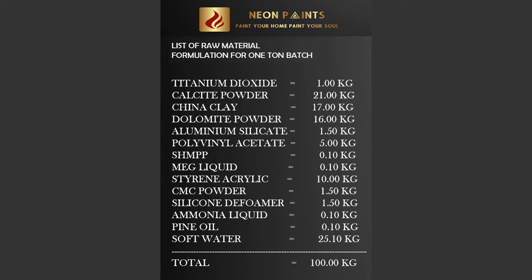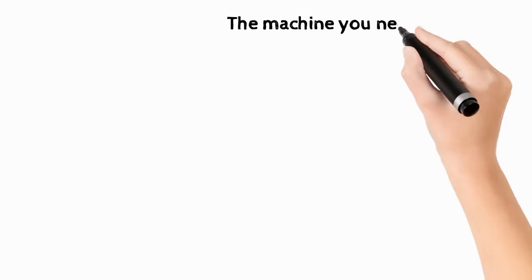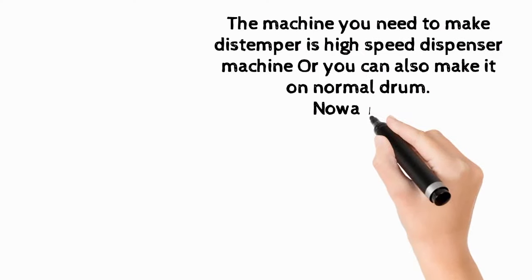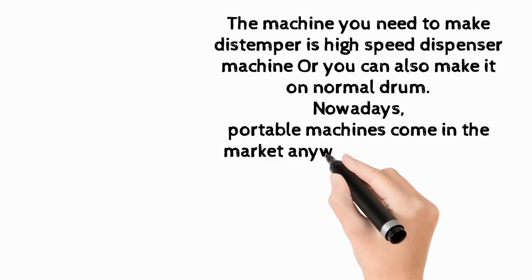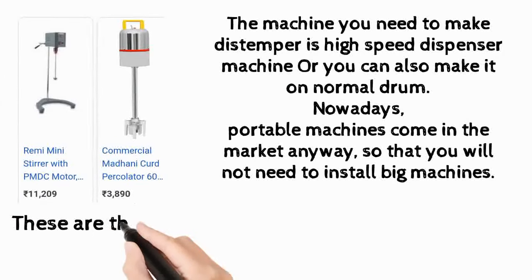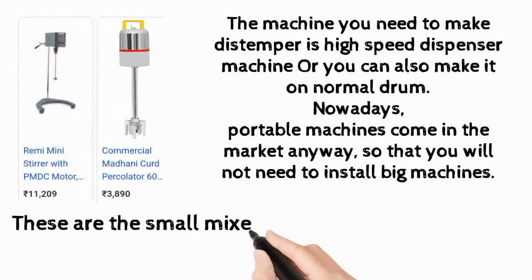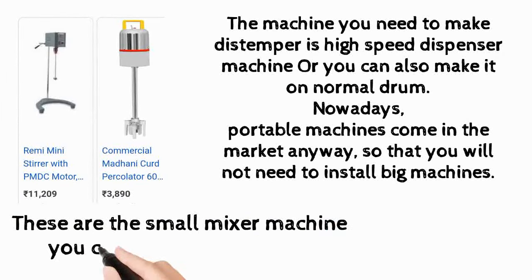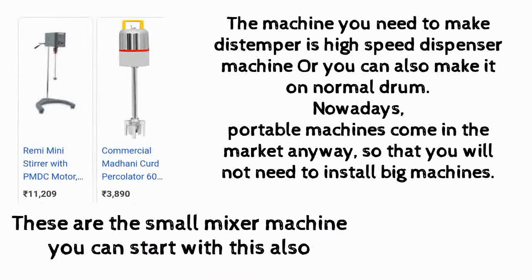Pine oil 0.100 kg, soft water 25.100 kg. The machine you need to make distemper is a disperser machine, or you can also make it in a normal drum. Nowadays portable machines come in the market, so you will not need to install a big machine. These are the small mixer machines you can start with.